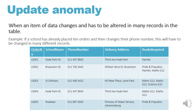An update anomaly is when an item of data changes but has to be altered in many records in the table. Say a school has already placed 10 orders and then they change their phone number — you are going to have to change that number in 10 different records, which is tedious and can cause problems. You may forget to change it in some records, and then you've got two different numbers floating around your database for the same school.